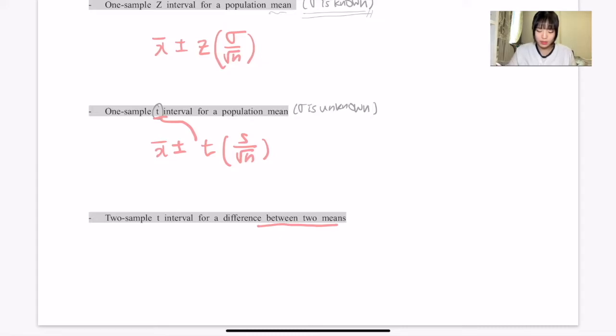When you're computing the confidence intervals for your two-sample T interval for difference between two means, you're going to have (x̄₁ - x̄₂) ± t√[s₁²/n₁ + s₂²/n₂].